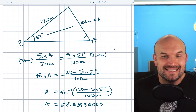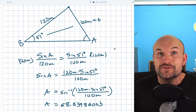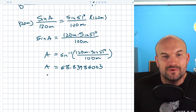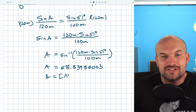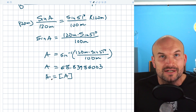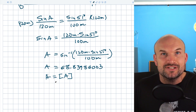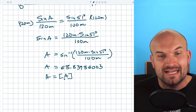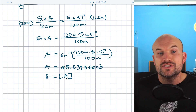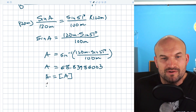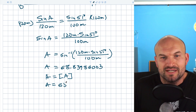So A equals 68.83986003. I tell students to go ahead and store this answer. When doing calculations, we want to use the stored answer and only round at the very end. But for the sake of writing our answer, we can round this to approximately 68.84 degrees.